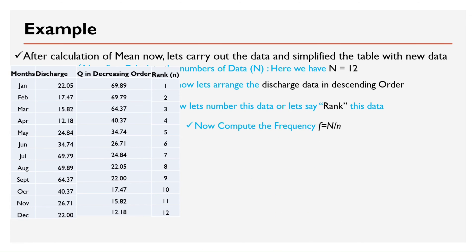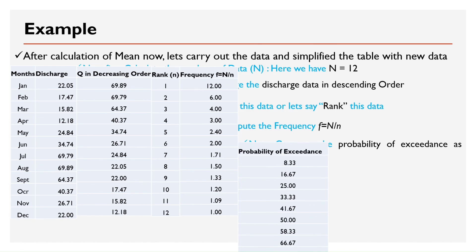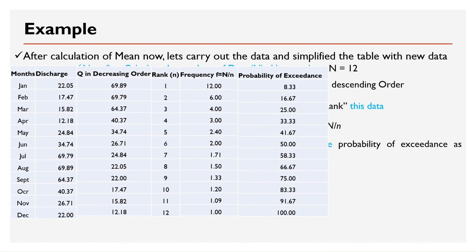Now compute the frequency f equals n slash n. Now compute the probability of exceedance as p equals 1 slash f asterisk 100.